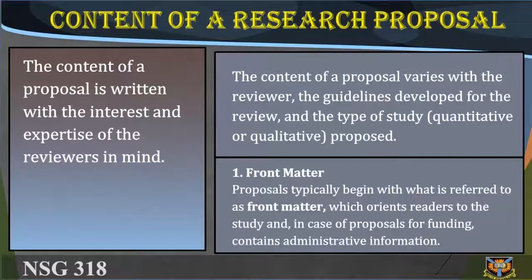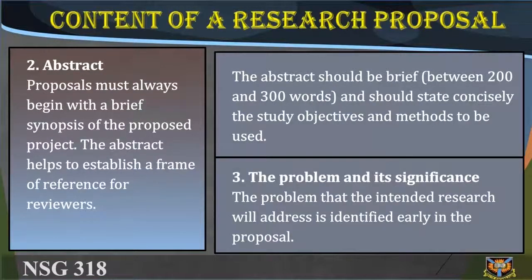Front matter: Proposals typically begin with front matter, which orients the reader to the study and, in the case of proposals for funding, contains administrative information. The front matter includes at a minimum a cover page indicating the title of the proposed study, the author name, and institution. The proposed title should be concise, informative, compelling, and interesting, indicating the phenomena to be studied and the population of interest. Abstracts: Proposals must always begin with a brief synopsis of the proposed project. The abstract helps establish a frame of reference for reviewers, should be between 200 and 300 words, and should state the study objectives and methods. Although an abstract appears at the beginning, it is often written last.